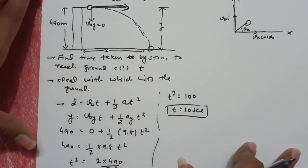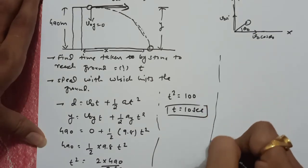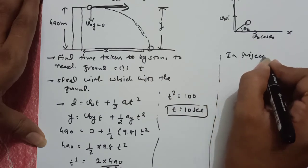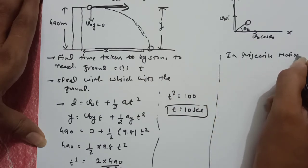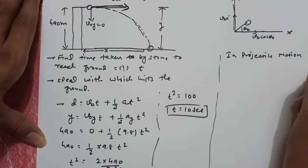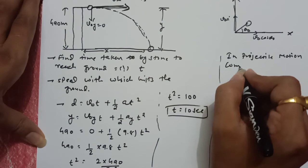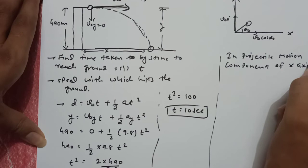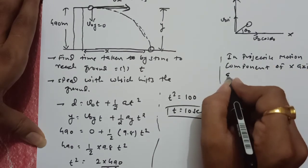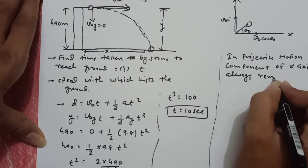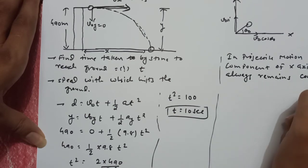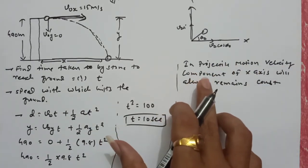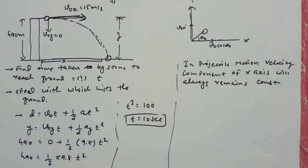Speed with which it hits the ground. अब मैंने आपको क्या बोला था कि यह kind of projectile motion है, and in projectile motion, velocity component of x-axis will always remain constant. x-axis की velocity always constant रहेगी — यह हमने पढ़ा था। So when ball reaches to ground, Vx (final velocity of x-axis) will be 15 meter per second, because it remains constant.